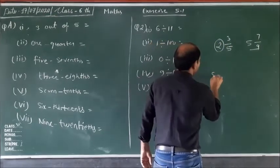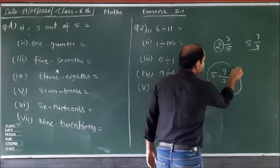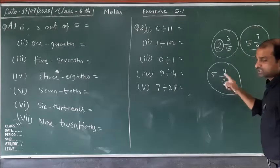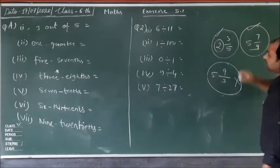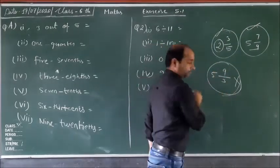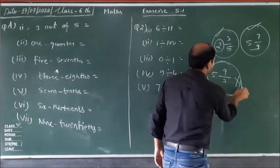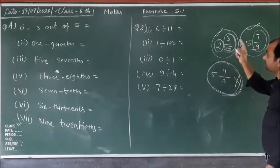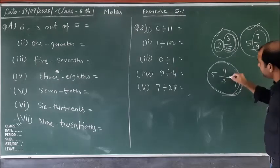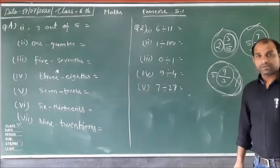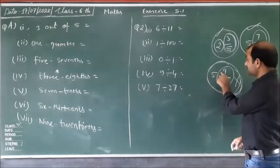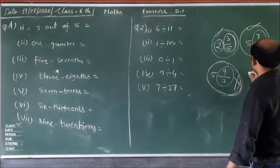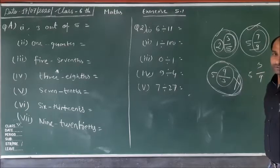But dear children, consider 5 over 9 upon 3 — is this a correct mixed fraction? This is also written as a mixed fraction, but this mixed fraction is wrong. Can you tell me why? Because in a mixed fraction, the fraction part must always be a proper fraction. Here, 3 upon 5 and 7 upon 9 are proper fractions, but 9 upon 7 is an improper fraction. In a mixed fraction, the numerator must always be less than the denominator. So this fraction is wrong.